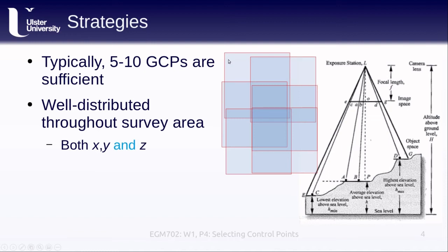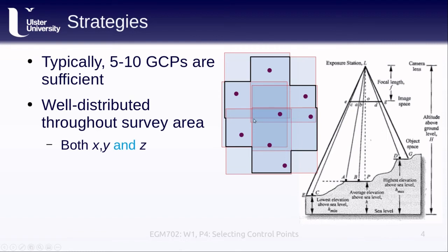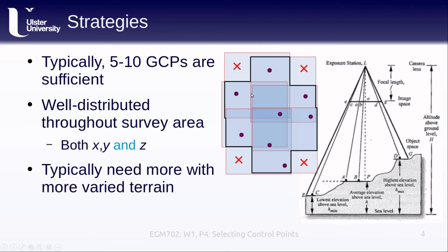For example, with six overlapping images, the overlapping area is shown in black. We might find a control point here visible in two images, another point visible in two other images, making sure we're sticking to the overlapping areas. If we put control points in only one image they will not be usable — we need to see control points in at least two images in our survey. We generally need more control points with more varied terrain.